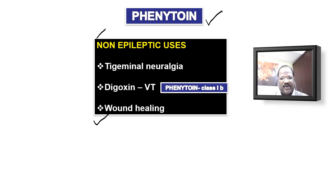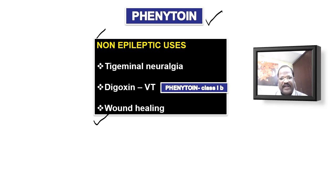To summarize what we have covered: phenytoin mechanism of action, kinetics, toxicity, and uses. Finally, one more point: phenytoin is a microsomal enzyme inducer. Because of that, when phenytoin is given with another drug, the other drug could easily get metabolized, leading to failure of that other drug. Remember that phenytoin has microsomal enzyme induction property. All these are important points about phenytoin.